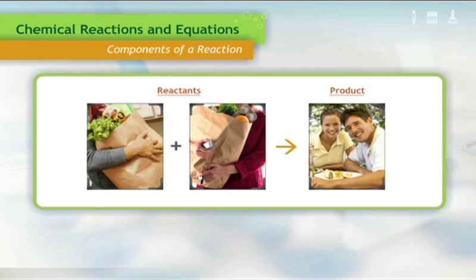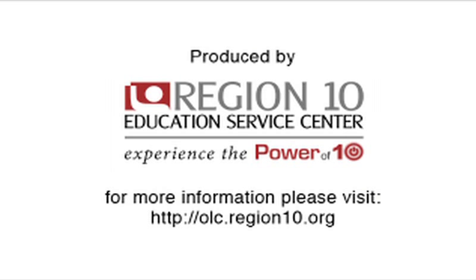This arrow is called the yields symbol, and points from the reactants to the product or products.